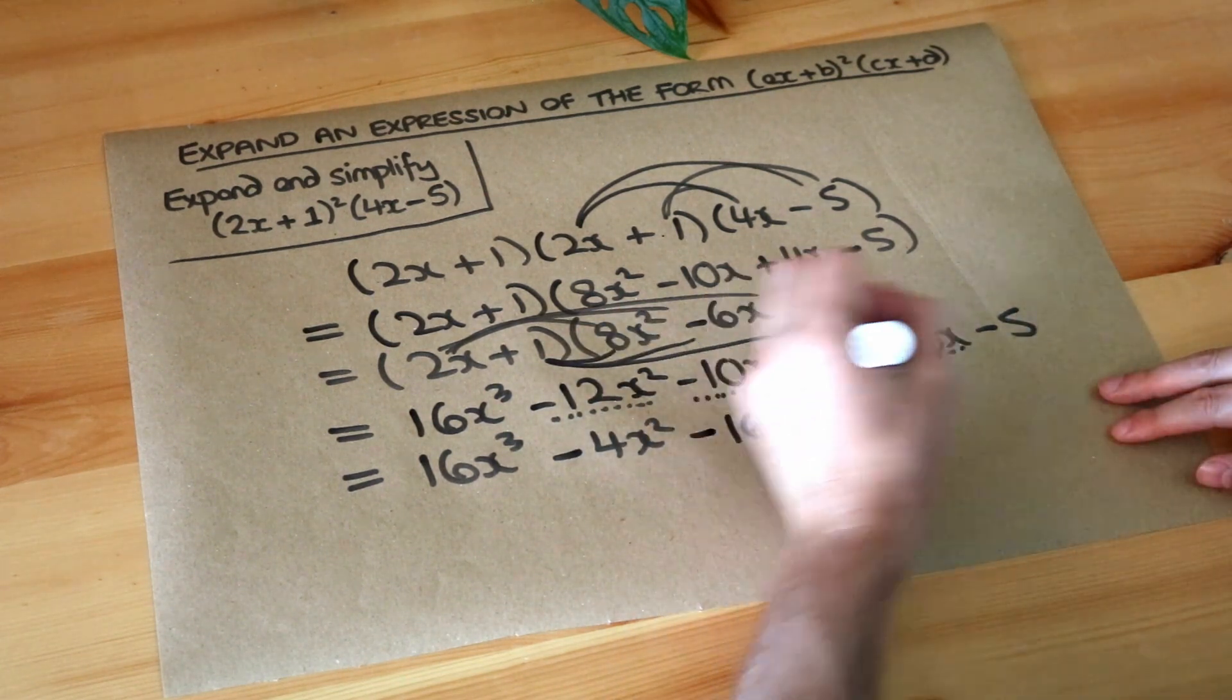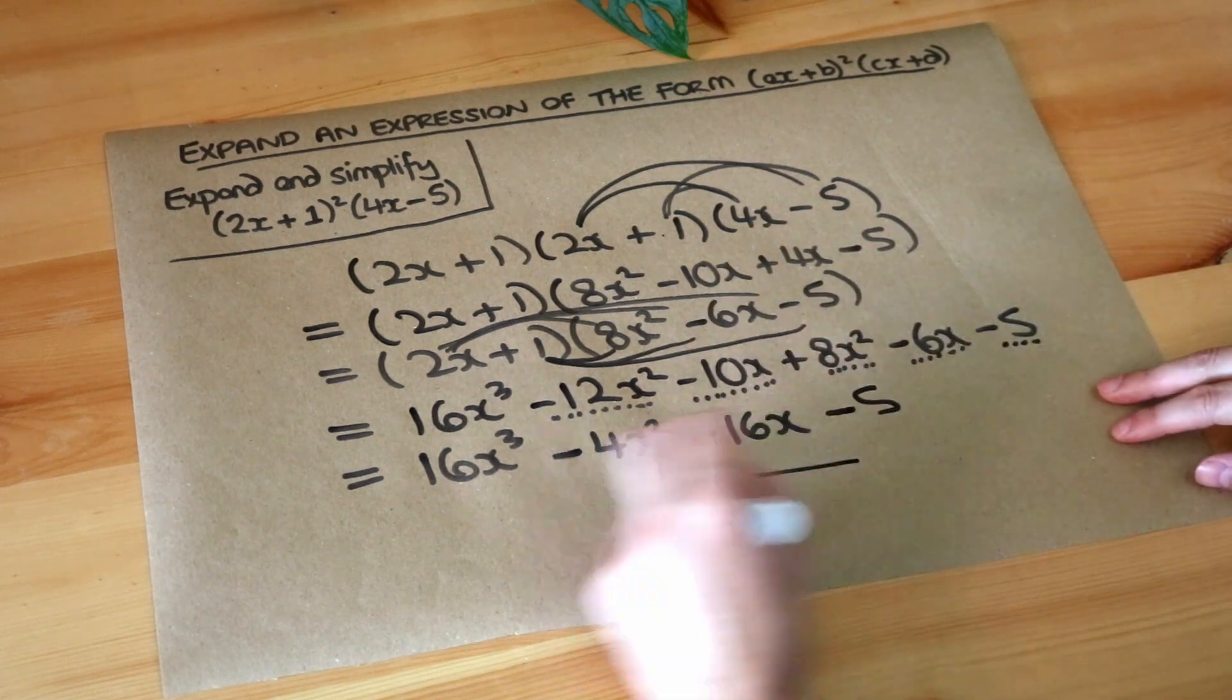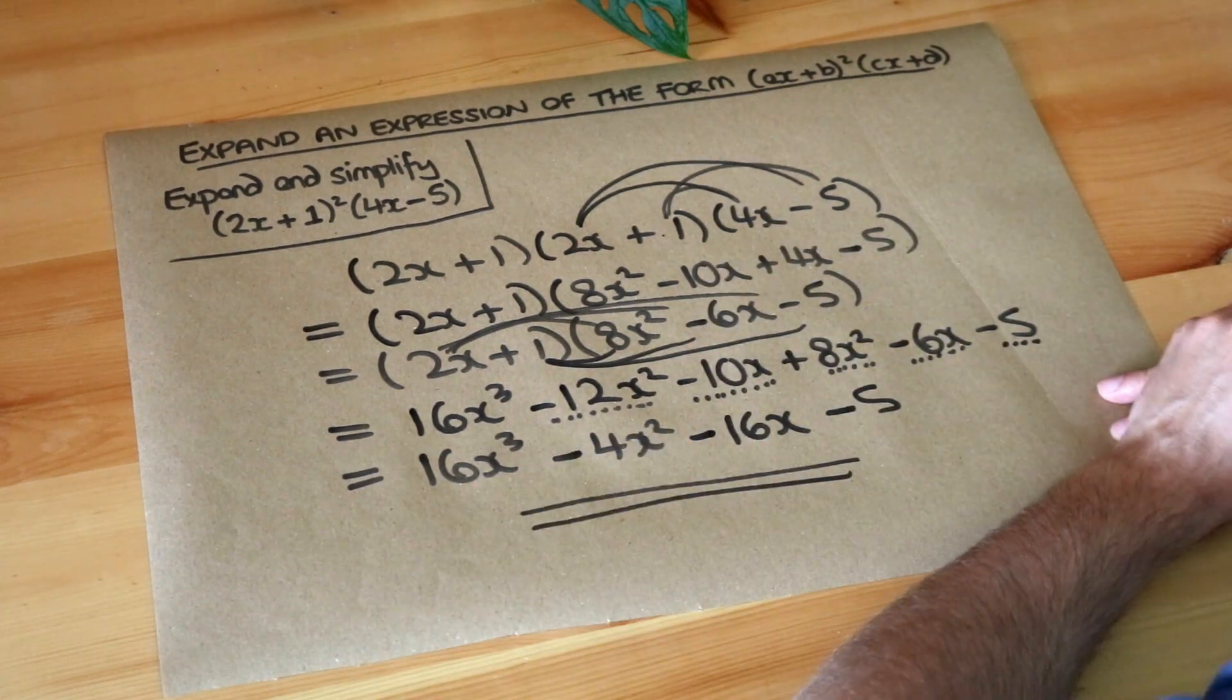And then finally we've got that minus 5 here. And that completes the expression. So that is the full simplified expansion.